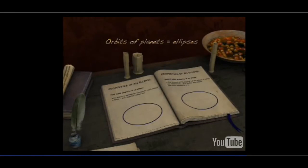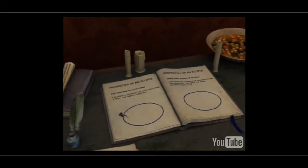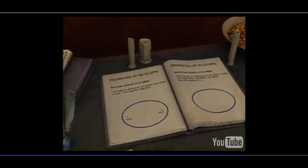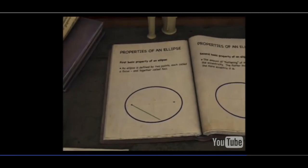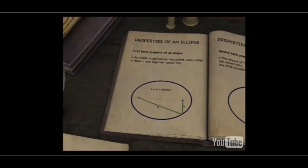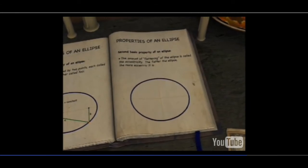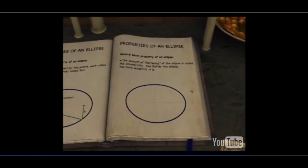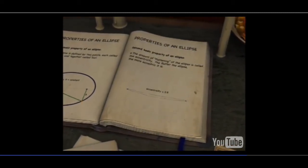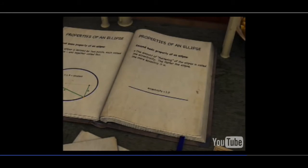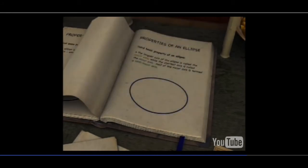Since the orbits of the planets are ellipses, let us review three basic properties of ellipses. The first property: an ellipse is defined by two points, each called a focus and together called foci. The sum of the distances to the foci from any point on the ellipse is always a constant. The second property: the amount of flattening of the ellipse is called the eccentricity. The flatter the ellipse, the more eccentric it is. Each ellipse has an eccentricity with a value between zero, a circle, and one, essentially a flat line, technically called a parabola. The third property: the longest axis of the ellipse is called the major axis, while the shortest axis is called the minor axis. Half of the major axis is termed a semi-major axis.